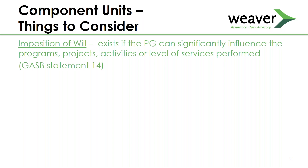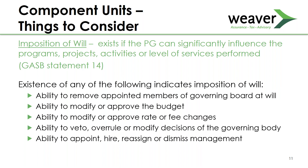Imposition of will exists if the government can significantly influence the programs, projects, or activities performed, per GASB Statement 14. Examples include: the ability to remove appointed members of a governing board at will; the ability to modify or approve the organization's budget; the ability to modify or approve rates or fee changes; the ability to veto, overrule, or modify decisions of the governing body; and the ability to appoint, hire, reassign, or dismiss members of management.